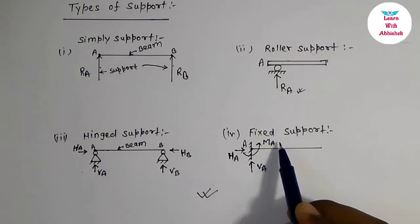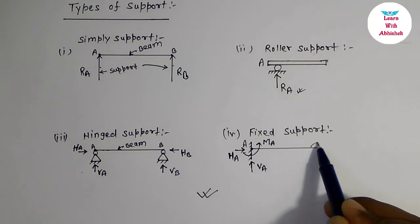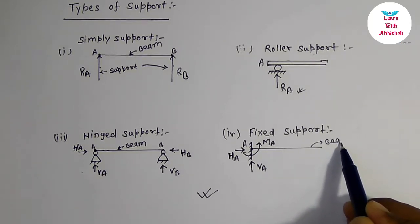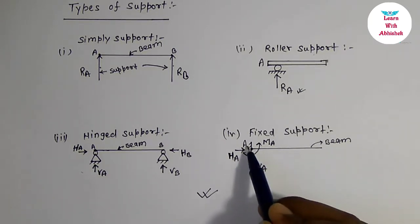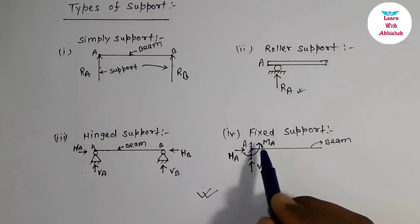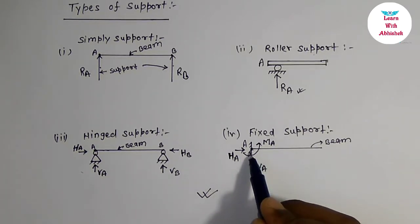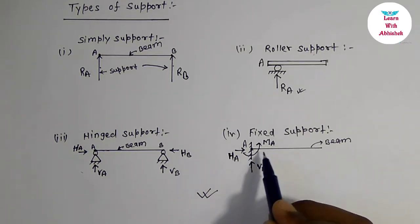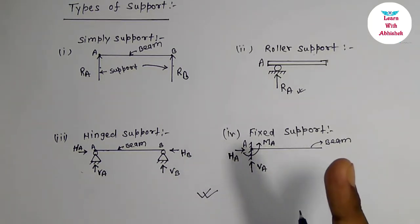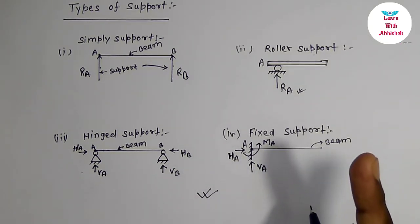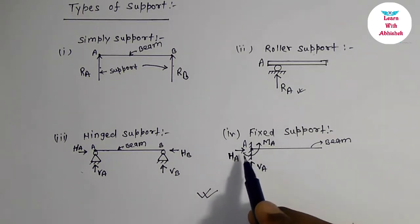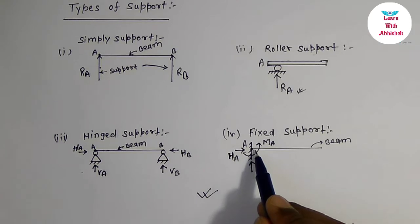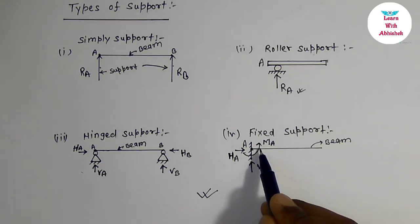Now we will discuss fixed support. This is the beam which is fixed at point A. In the case of fixed support, there will be three reaction components: one is along the vertical axis, one is along the horizontal axis, and one moment at point A.